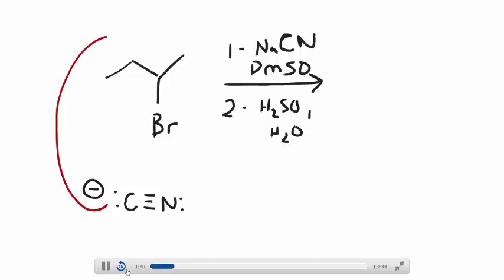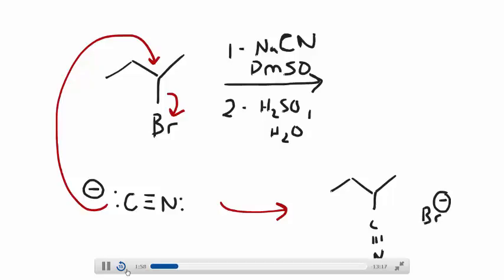This carbon will act as a nucleophile; it will do a backside attack and kick out the bromine. As that occurs, you've added the nitrile group, and the bromide is your leaving group, which pairs up with the leftover sodium. This is what you get after the first step — just an SN2 substitution. The neat thing about this first step is that you do make a carbon-carbon bond, which is very important when looking at these reactions.